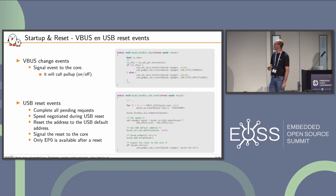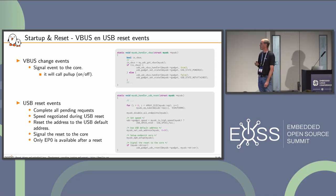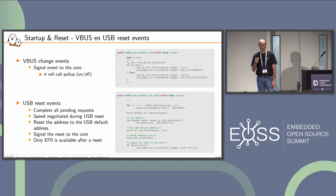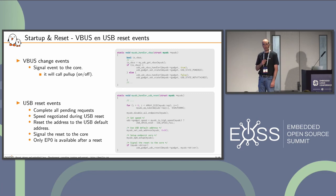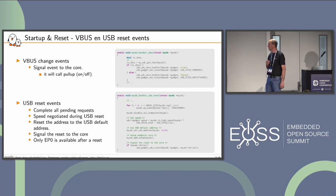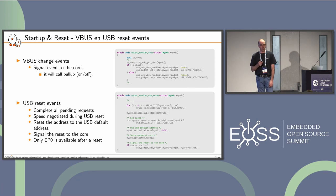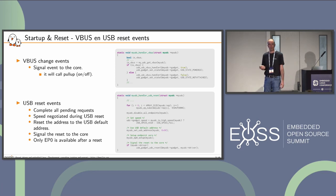Regarding bus events: if we monitor VBus changes, we signal them to the core using USB UDC VBus handler, and in turn the core calls the pull-up hook to activate or deactivate the pull-up. On USB reset, we complete all pending requests and give them back to the core. The speed is negotiated during a USB reset, so this is the time to read the current negotiated speed. We reset the address to the USB default address, signal the reset to the core, and note that after reset only endpoint zero is available for any transaction.